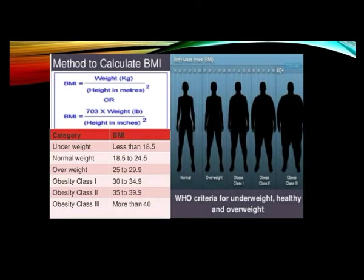The next popular method to calculate healthy weight is the BMI method, also known as Body Mass Index. There is a simple formula: divide your body weight in kilograms by your height in meters squared. The healthy BMI range is the same for both women and men.